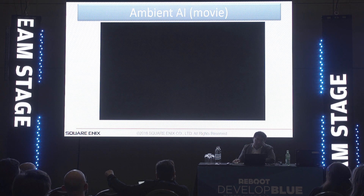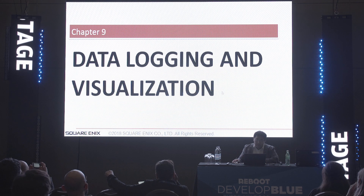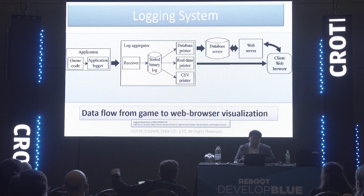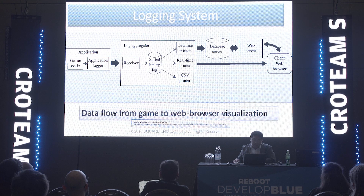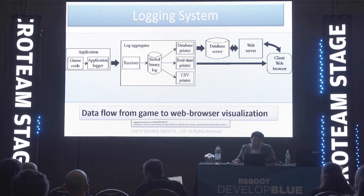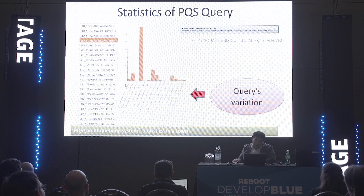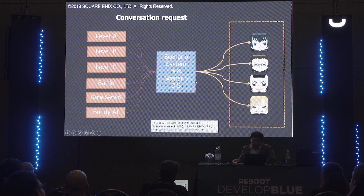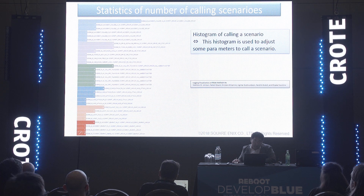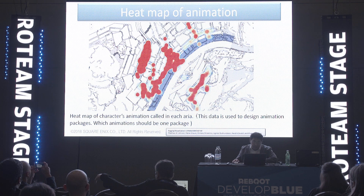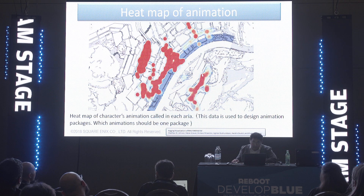Finally, data logging and visualization. Recent AAA titles have very huge systems, and many game developers cannot see the status of the game system. So logging data is stored on servers, and by analyzing this big data we can see the system's status. For example, the statistics of PQS queries, and statistics of scenarios called by meta AI — this scenario was called seven times by meta AI. This is a heat map of animations: in this region, a special animation is called many times.